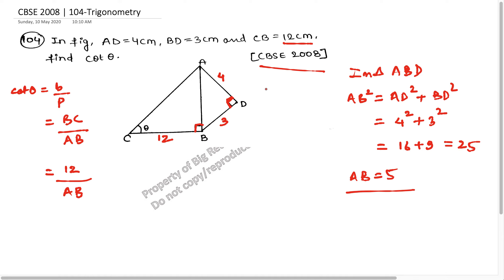So we know that the value of AB is 5. I just have to plug that value here and I get the final answer as 12 upon 5. And this is the final answer.